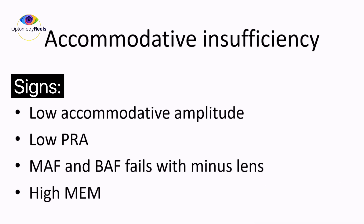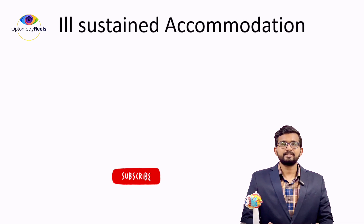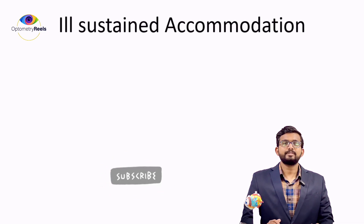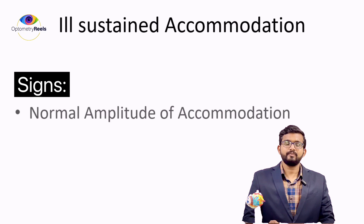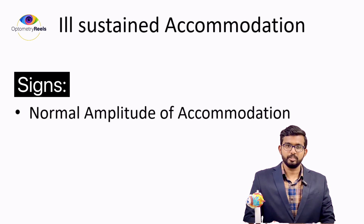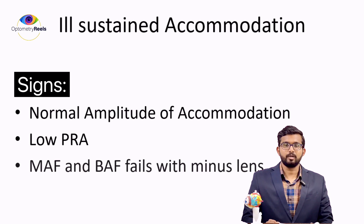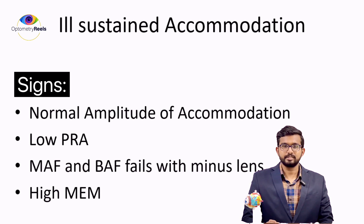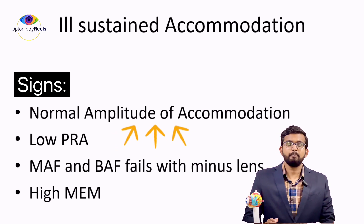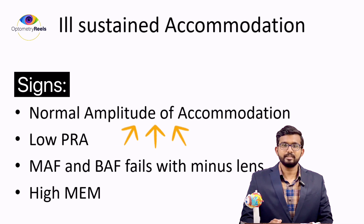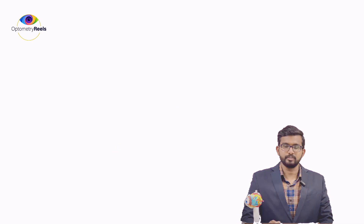Next is sustained accommodation. It is almost the same as accommodative insufficiency, except there will be a normal amplitude of accommodation. The low PRA remains, monocular and binocular accommodative facility will have minus lens difficulty, and MEM will be high — so only the amplitude becomes normal; the rest is the same as accommodative insufficiency.